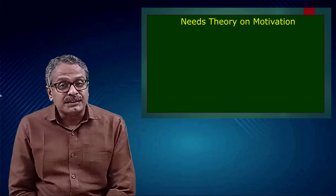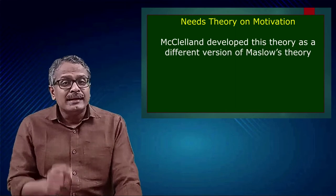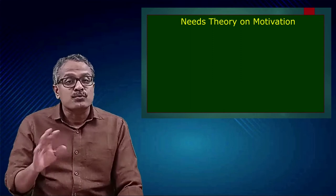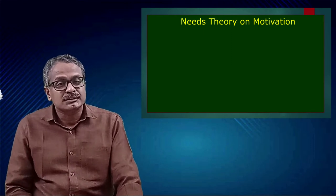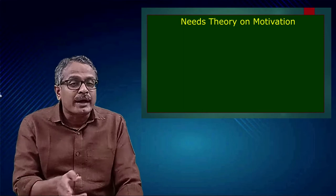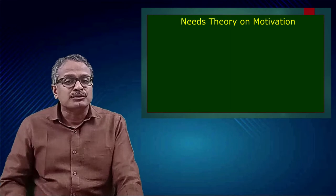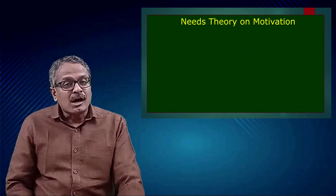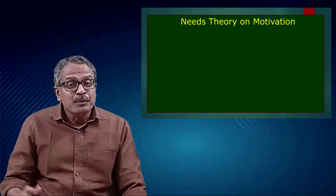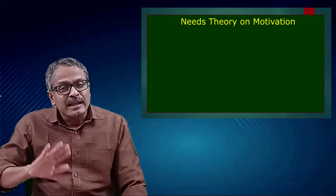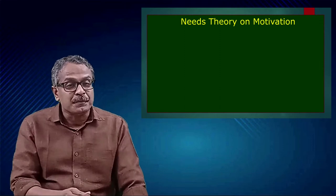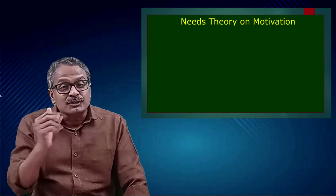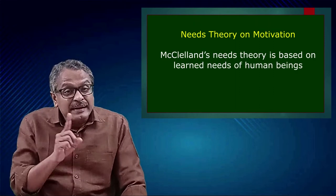When we analyze the three needs theory, we can understand that David McClelland developed this theory as a different version of Maslow's theory. McClelland is not talking about the need for food and water — he is silent about such basic physiological needs. His needs are power, affiliation, and achievement. Power is dominance over others, affiliation is interaction with others, and achievement is becoming victorious among others. All needs are related to others, connected to society, and developed out of the social environment. These are learned needs from experiences in society.